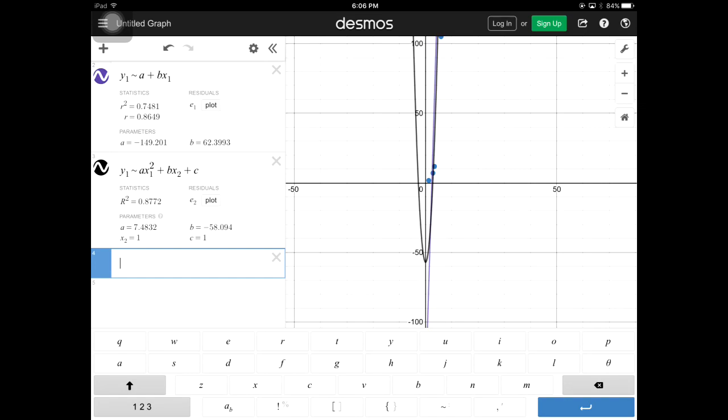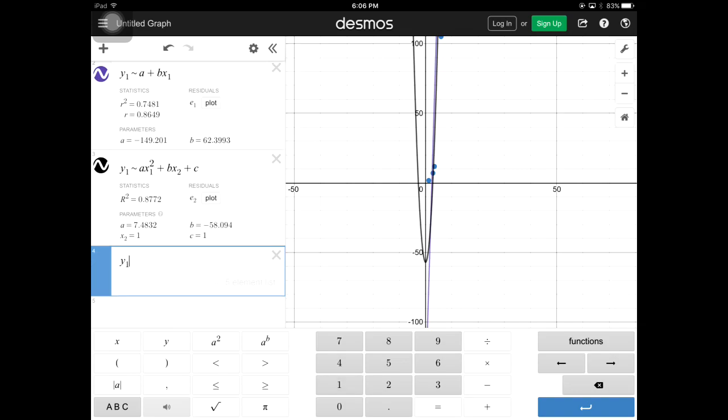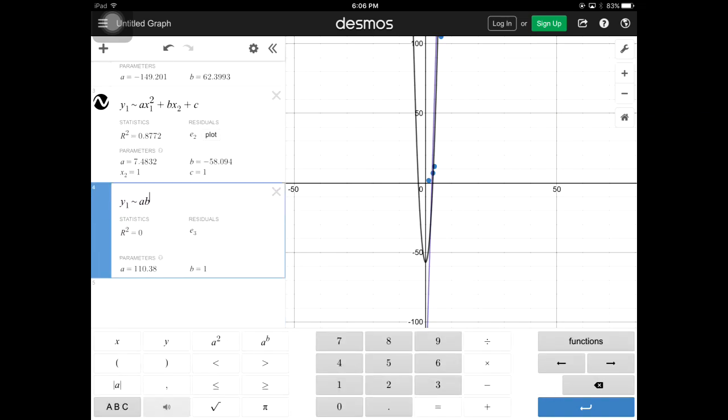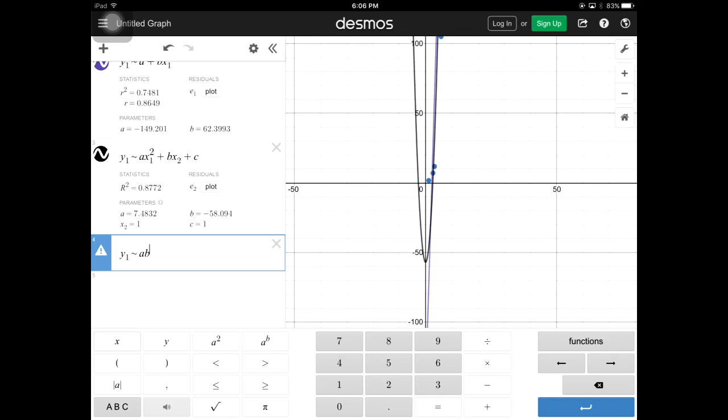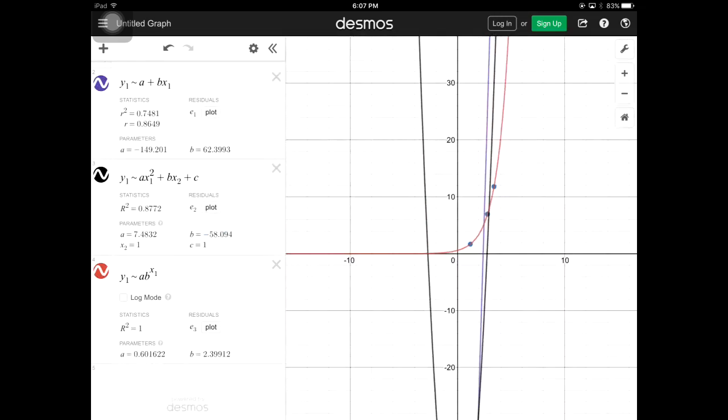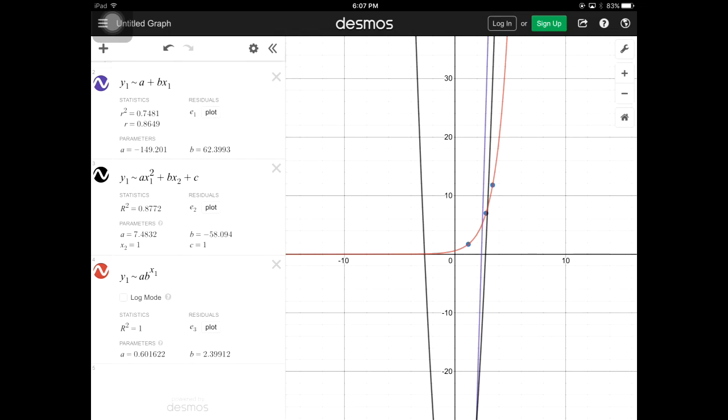I'm going to go and enter the exponential one. This one you should be familiar with because we have done it already. So it is y1 approximate a times b to the x1. So that is my exponential one. If you guys can go ahead and take a look at the three of them, the purple, black, or the red.